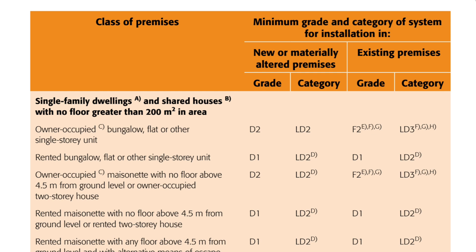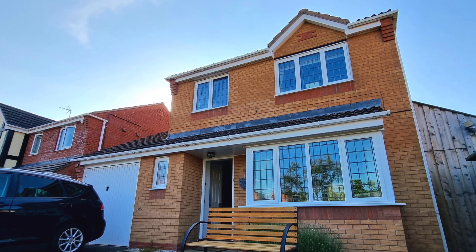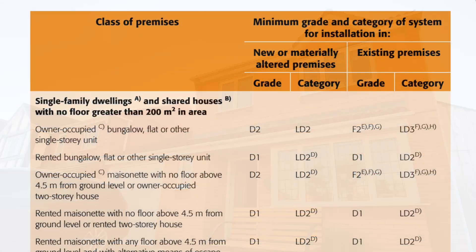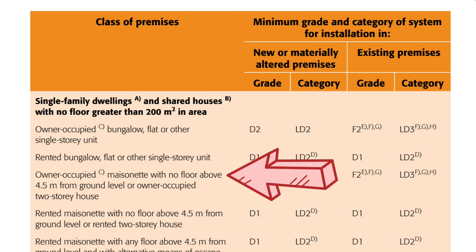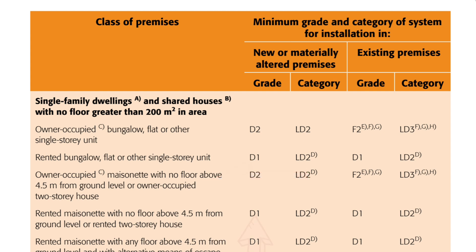There are some very interesting notes relating to existing properties, and we'll get to those in a moment. So let's take the example of my property and see if we can find it on the list. It's a two-storey house and I own it and live in it, so we find it listed alongside owner-occupied maisonette with no floor above four and a half metres from ground level, and owner-occupied two-storey house. The grade for a fire detection system in a new property is classed as D2, and the category would be LD2.